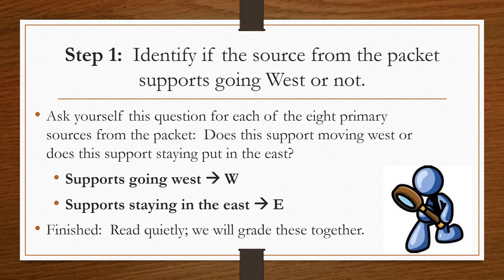Step one is to identify if the source from the packet supports going west or not. You were handed a packet with eight different sources, both secondary and primary, and you are expected to ask yourself this question for each of the eight primary sources from that packet: Does this support moving west, or does this support staying put in the east?